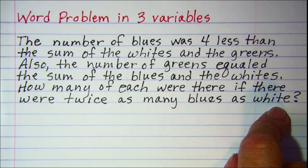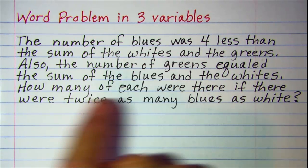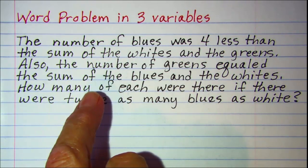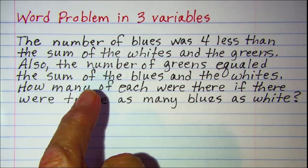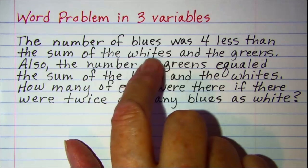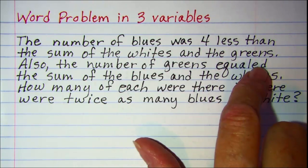Now this basically is a translation problem. So we're going to translate these sentences into algebraic sentences or equations. We'll use B for blues, W for whites, and G for greens.